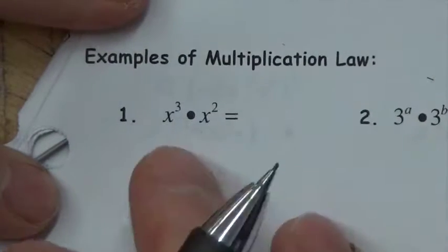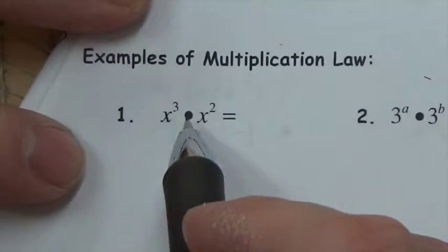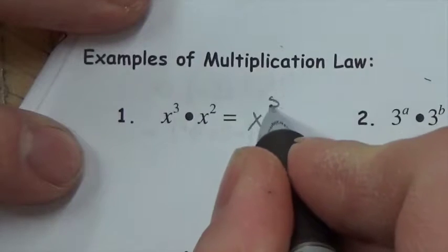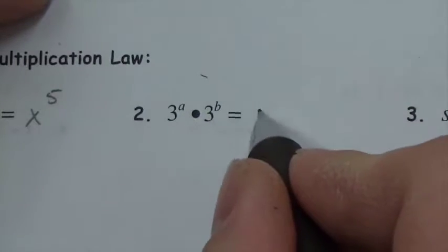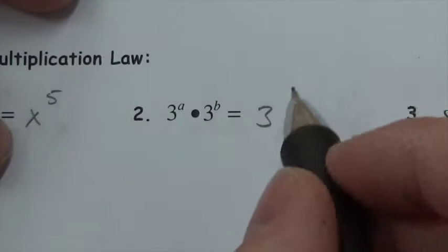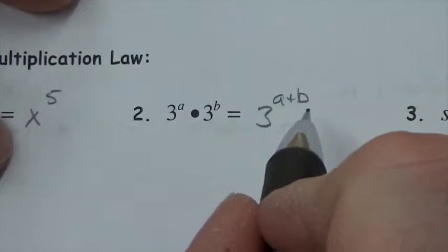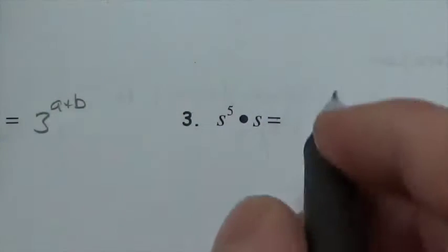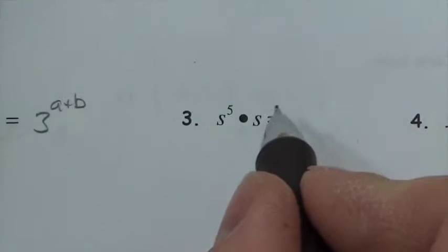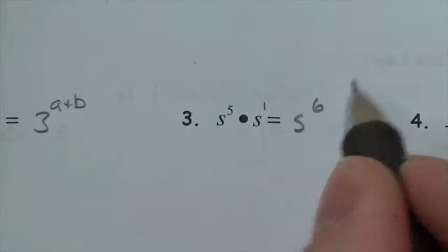Examples of the multiplication law: x cubed times x squared — add the exponents to get x to the fifth. For 3 to the a multiplied by 3 to the b, I don't know what a and b are, so the best I can do is express the result as 3 to the a plus b. For s to the fifth multiplied by s — remember that an unwritten exponent implies 1 — so this would be s to the sixth.